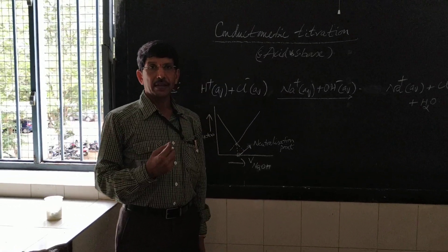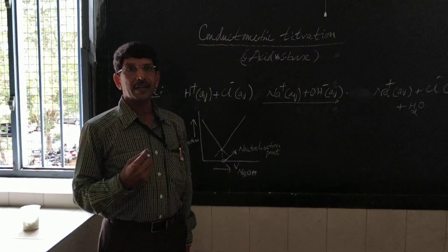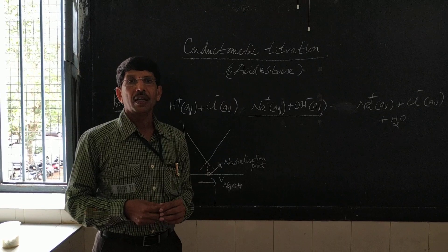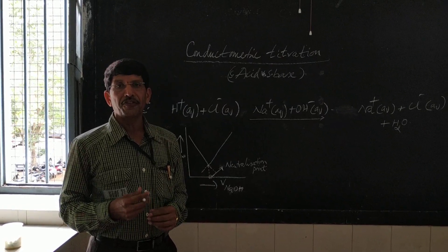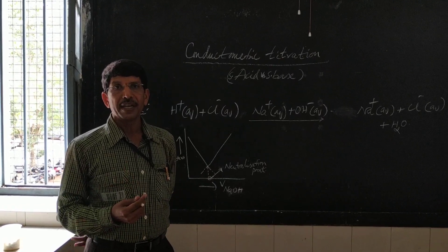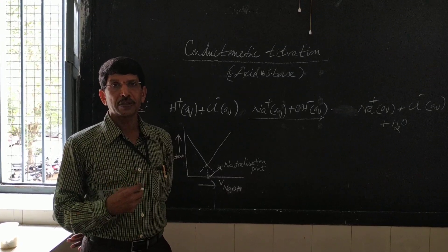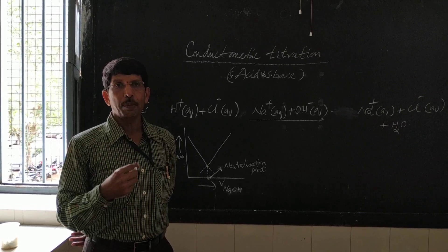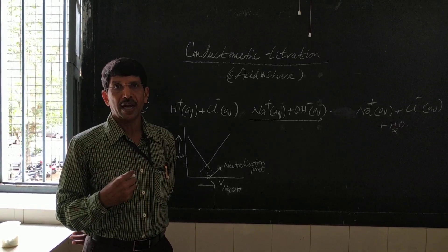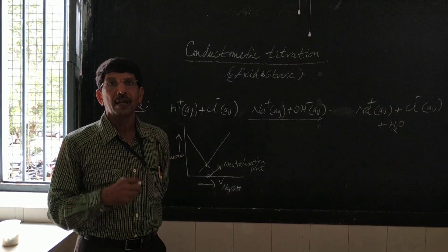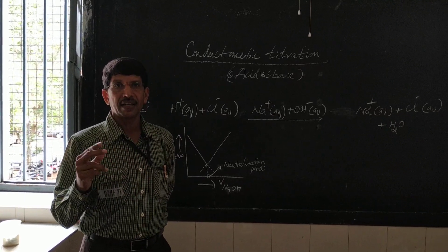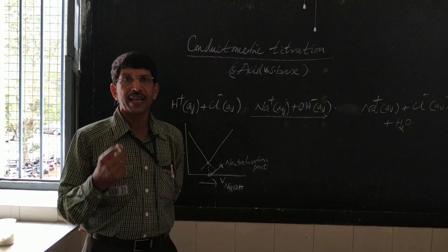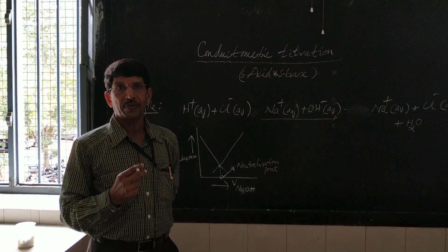The principle is that during the titration of an acid against a base, there is a replacement of one ion by another ion which differs in ionic mobility and conductance. Hence, during the titration, as we add more and more titrant, depending upon the ion being replaced and the ion that is replacing, either conductance will increase till the end point, or decrease till the end point and then increase, or remain constant, based on the nature of the titrant used.